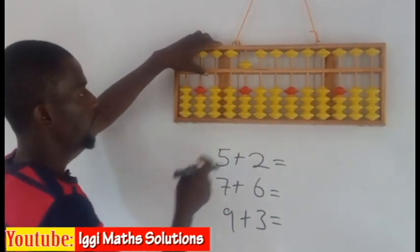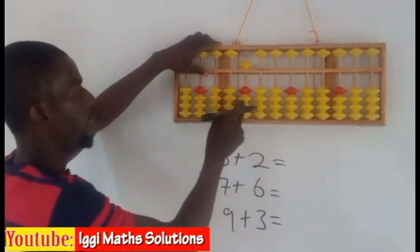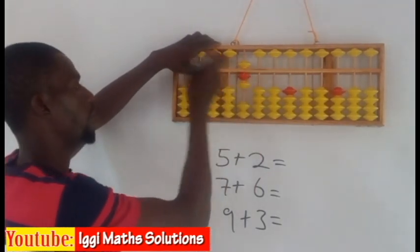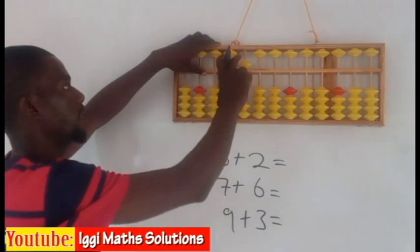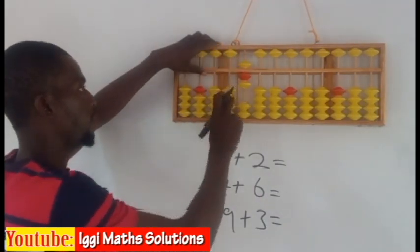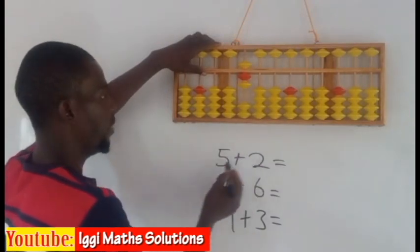then plus 2. On the unit rod I have to push 2 to touch the equivalent bar so that the abacus is now 7. So the value of abacus is 7 which is my answer. So 5 plus 2 is 7.